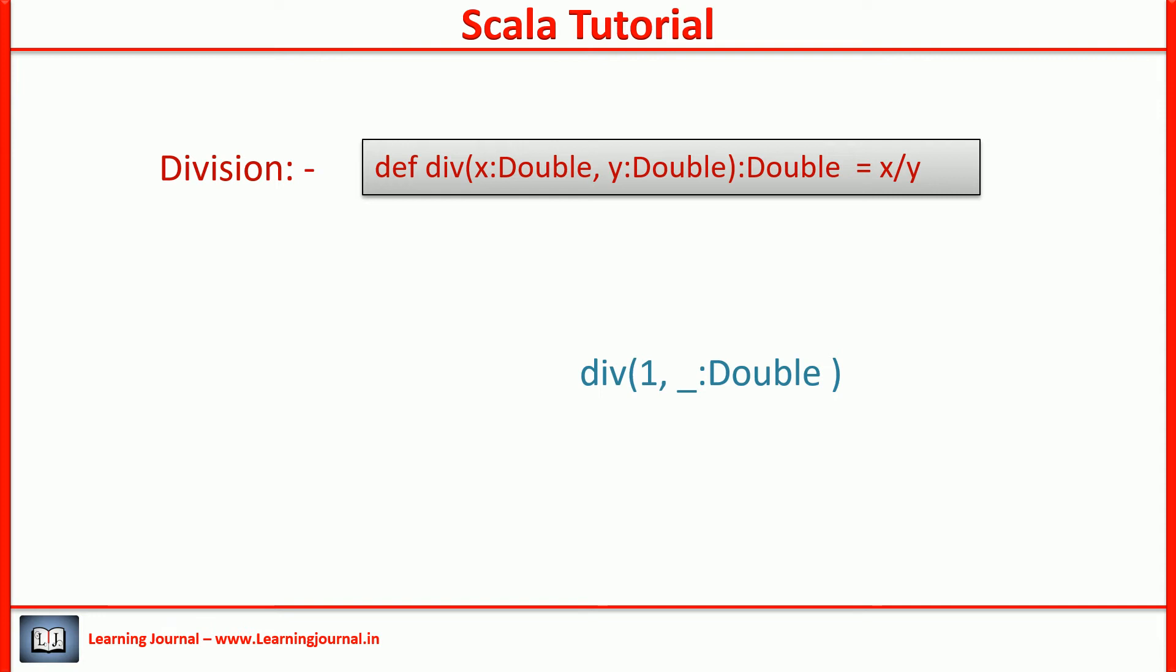So, if you call this partially applied function, Scala will return a new function. Strange, right? If I look at the implementation of my division function, it doesn't return a function. It simply returns a double. But in case of partially applied functions,